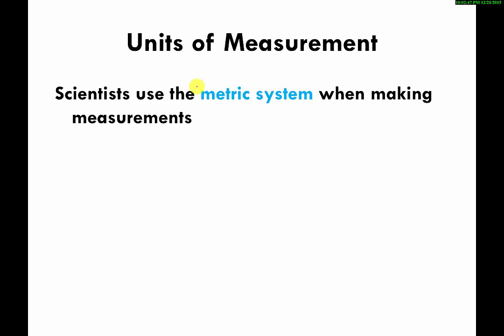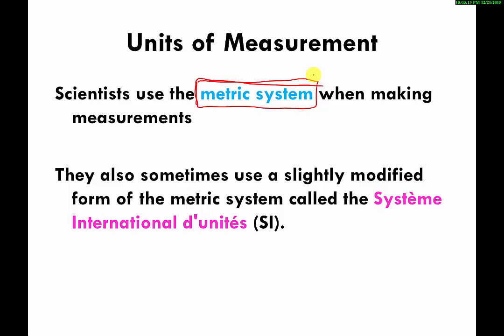The metric system is probably the most common collection or system of units that scientists and a lot of people in the world use for measuring things. We won't cover all the units in the metric system, but we'll cover some. There's another system or collection of units related to the metric system.